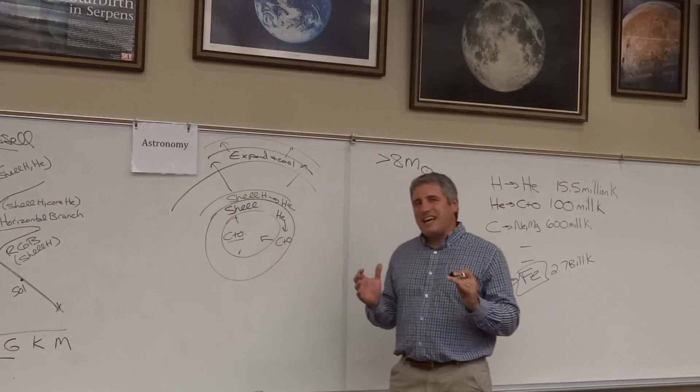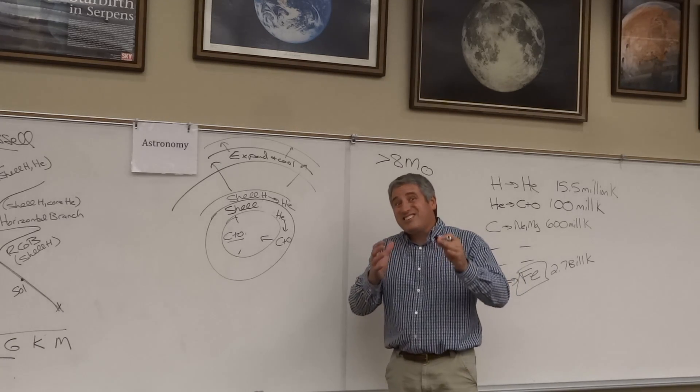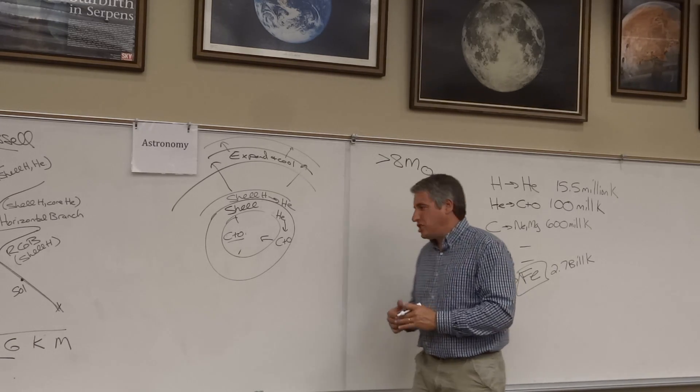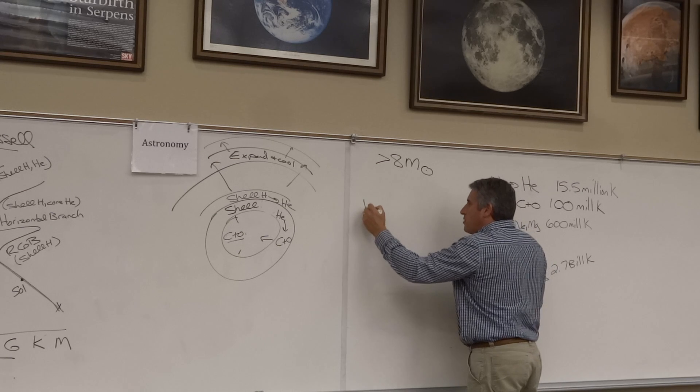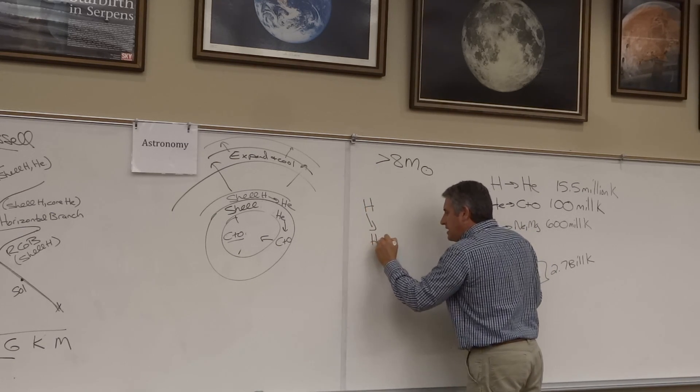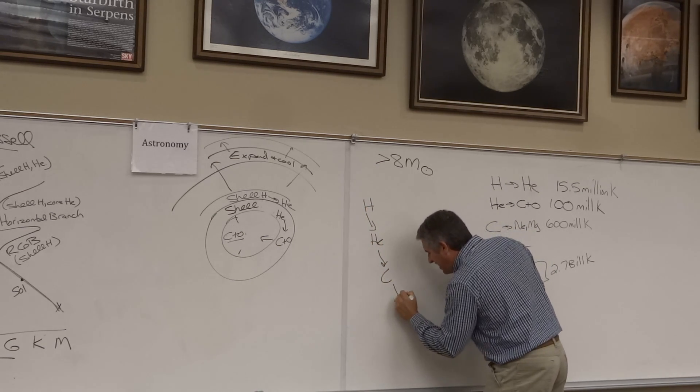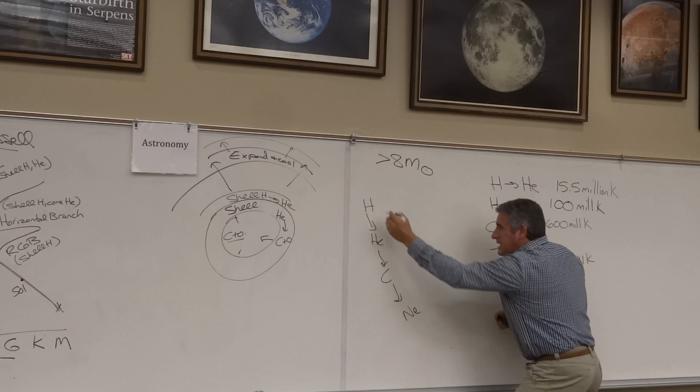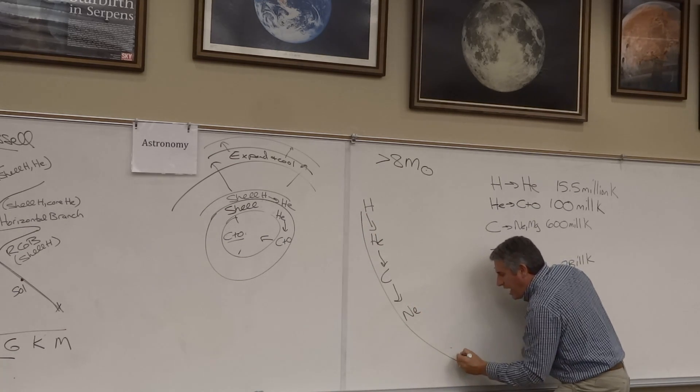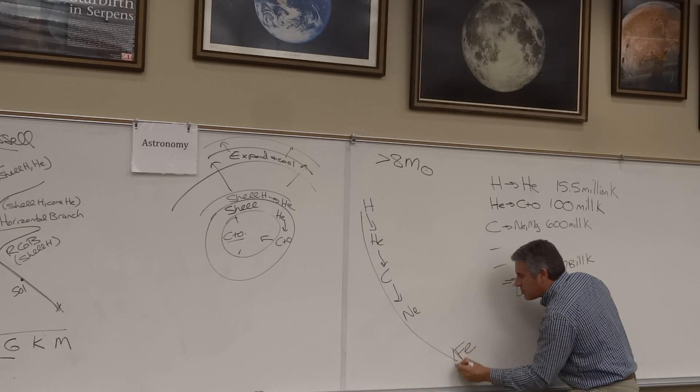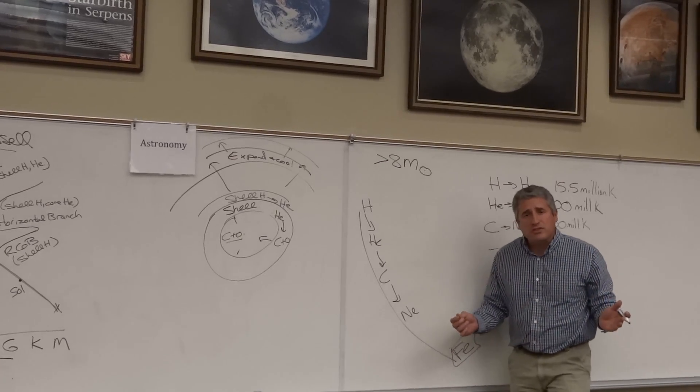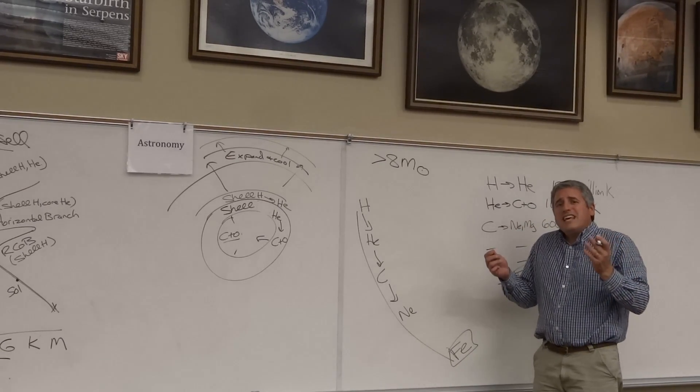It turns out you cannot take iron and build anything else out of it and get energy. We have burned hydrogen into helium and helium into carbon and carbon into neon, all the way down the list. We get down the bottom of the hill and iron sits there. Iron is the most stable element in the universe.